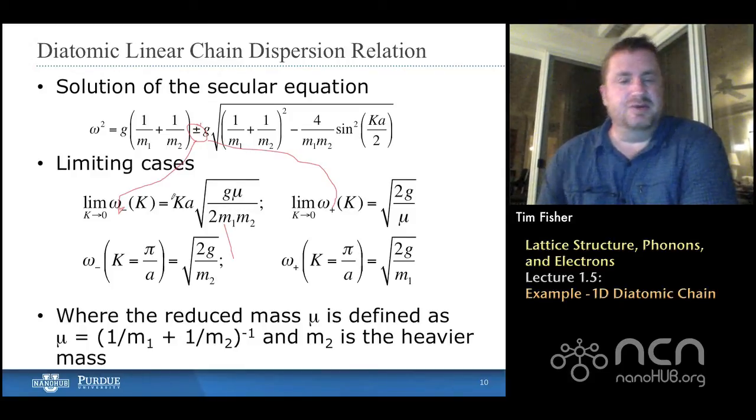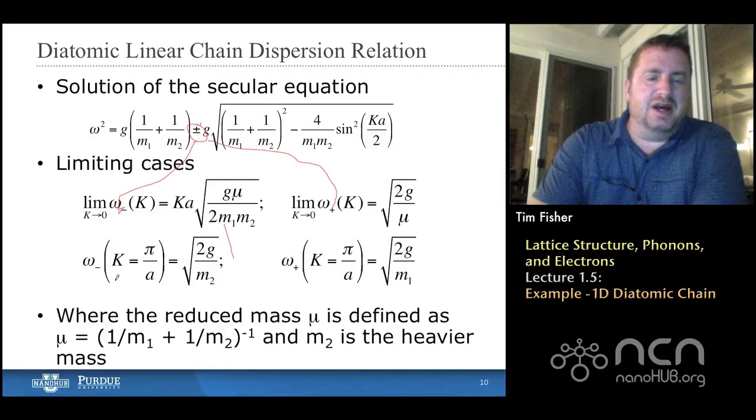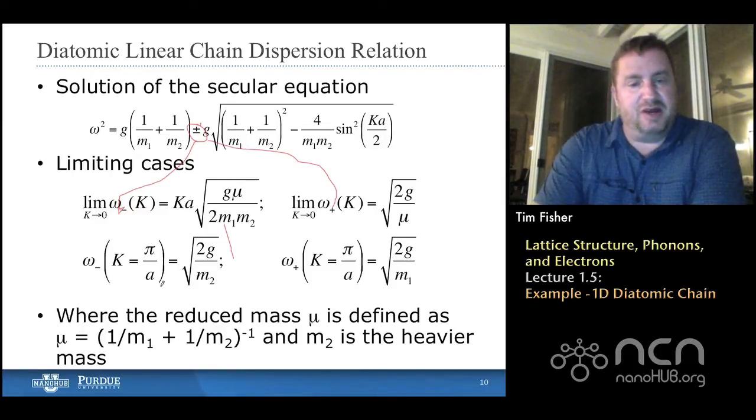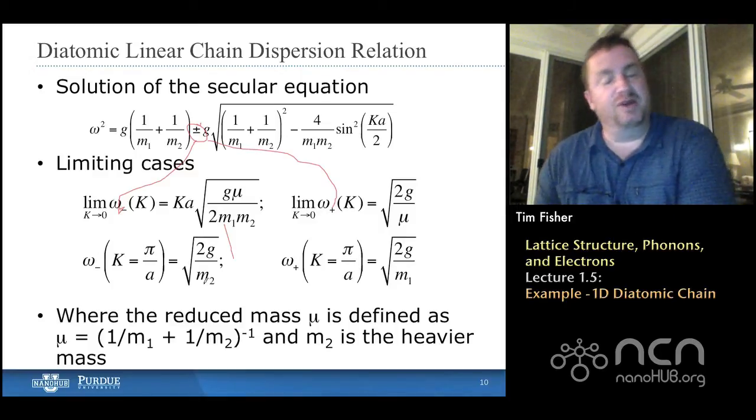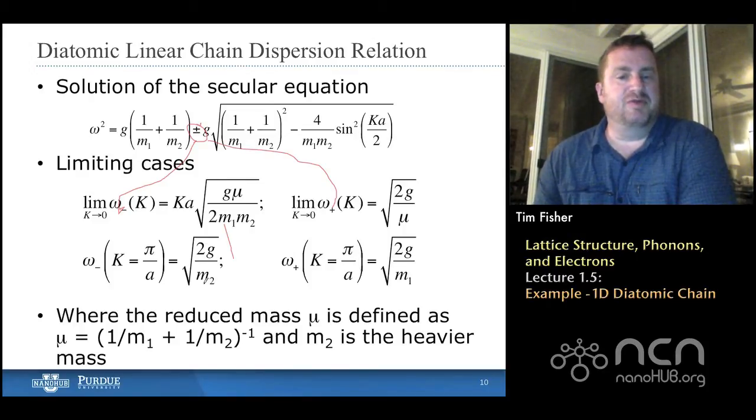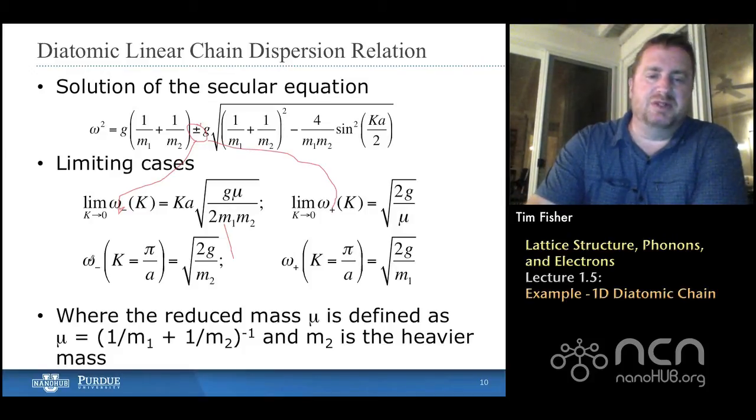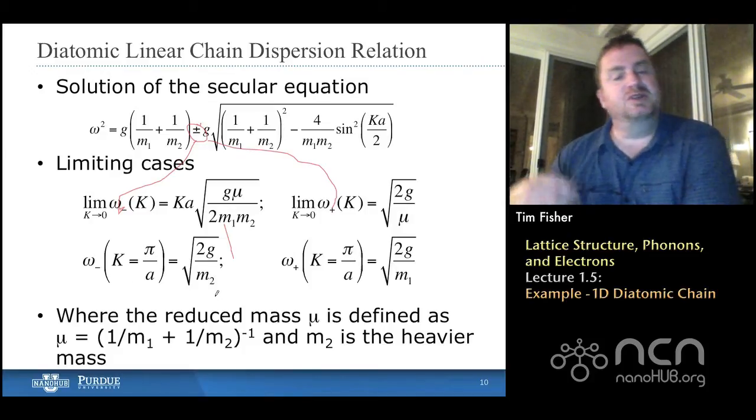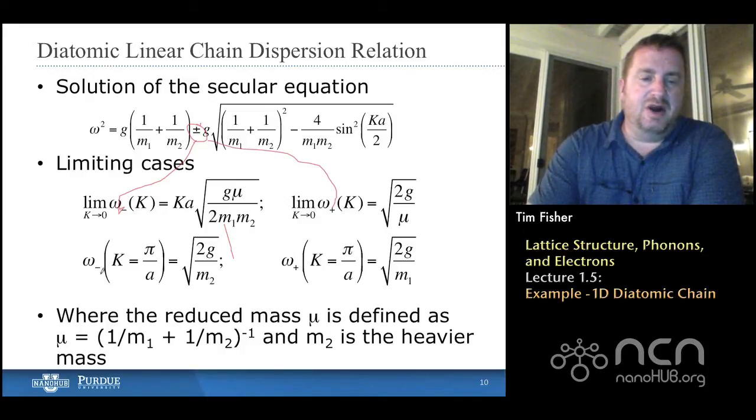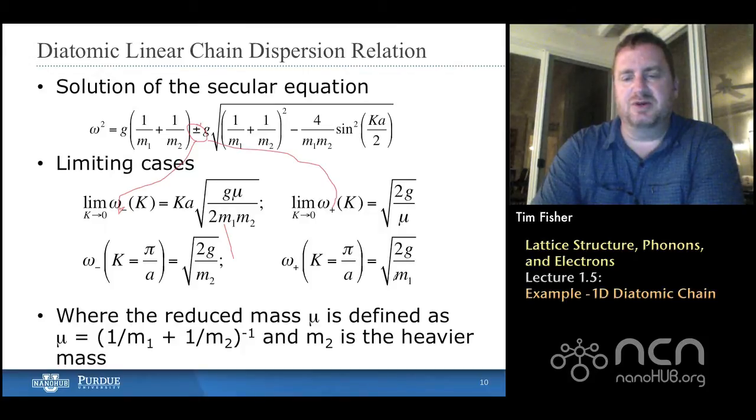And then, as k goes to the edge of the first Brillouin zone, that's at pi over a, we find that omega goes to the square root of g over one of the masses. So, that's also similar to what we had before. That was, there was a square root of g over m. That was sort of the limiting maximum frequency. In this case, remember, m2 is larger than m1, which means that this frequency, omega minus of this branch, is going to be lower than the corresponding limiting frequency. When k equals pi over a, again, at the edge of the Brillouin zone, this branch will have a somewhat higher frequency at that edge.